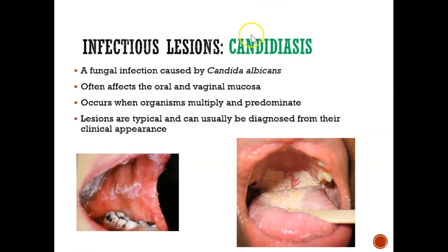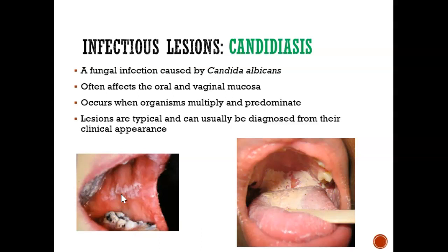The next lesion is candidiasis, also known as thrush. When you see white patches inside the mouth, it's a fungal infection. The best way to treat it is with an antifungal drug like Nystatin or Ketoconazole. There are many different types of medications that can be used to treat thrush or candidiasis.